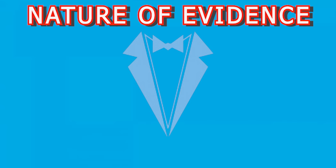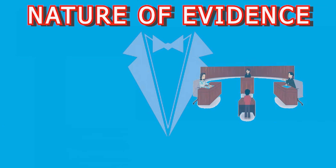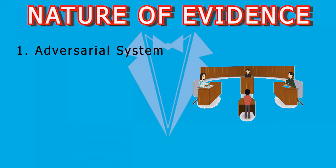Firstly, the adversarial system. The nature of evidence is closely tied to the adversarial system followed in the Indian legal framework. Parties involved in a case present evidence to an impartial adjudicator who decides the matter based on the evidence presented.